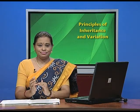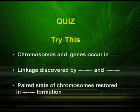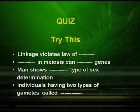I have a small quiz for you. Try this: The chromosomes and genes occur in ___. Linkage was discovered by ___ and ___. The paired state of chromosomes is restored in ___ formation. Linkage violates the law of ___. ___ in meiosis can ___ genes. Man shows ___ type of sex determination, and individuals having two types of gametes are called ___. In the next episode, we are going to discuss genetic disorders, mutation, and pedigree analysis.